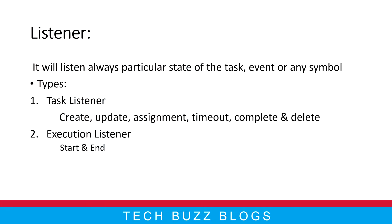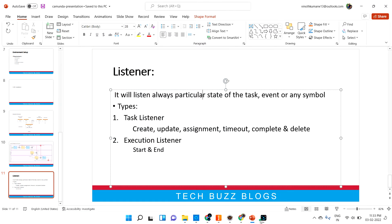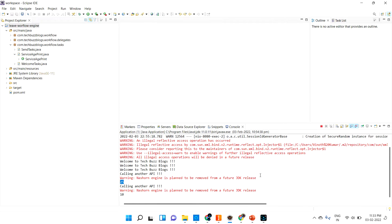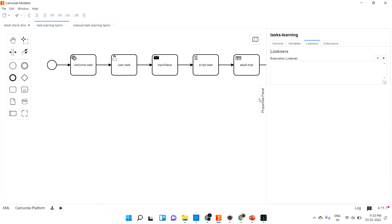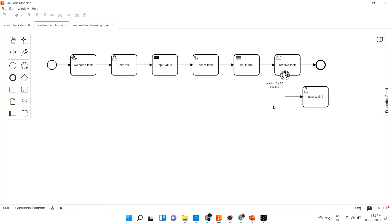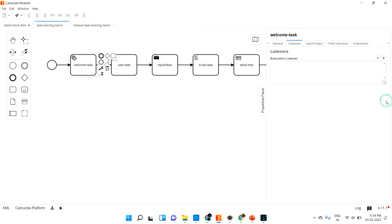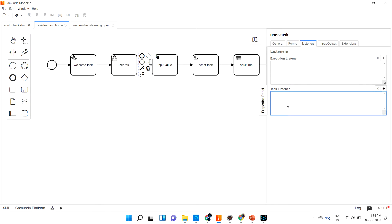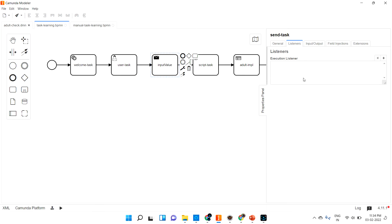Let's see an example of how we can really achieve that in practice. Let me go into our earlier example. If I click here and go to the properties panel, you can see the listener tab. Since this is a service task, only execution listeners are there. If I go to this user task, you can see execution listener as well as task listeners. For send task, again only execution listener — as I told, only user task will have both task listener as well as execution listener.